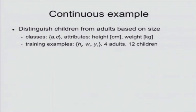So what does this mean? This means we have training examples, they're triples: h_i, the height of the ith instance, the weight of the ith instance, and the class, adult or child. And let's say we have four adults and 12 children.